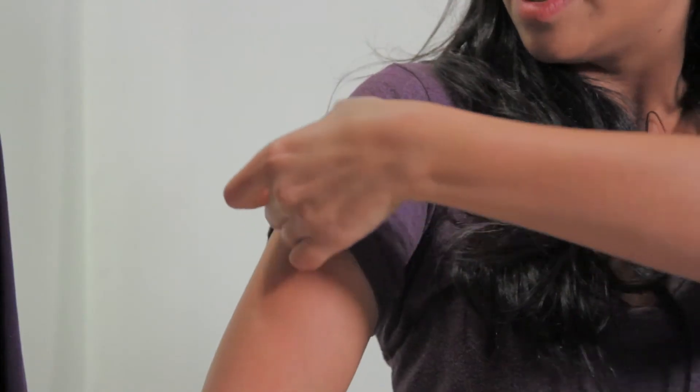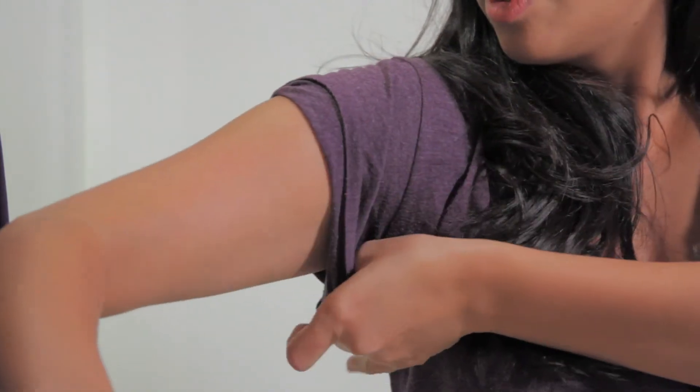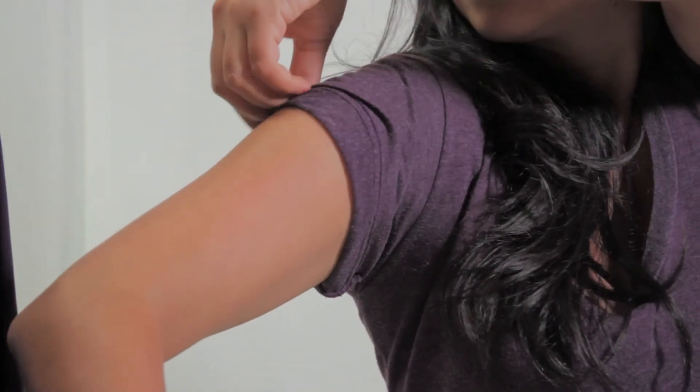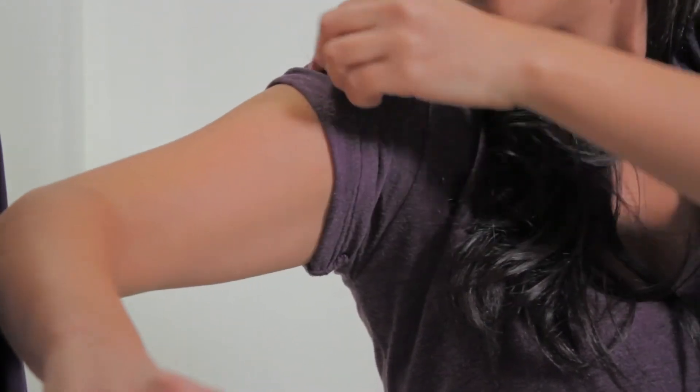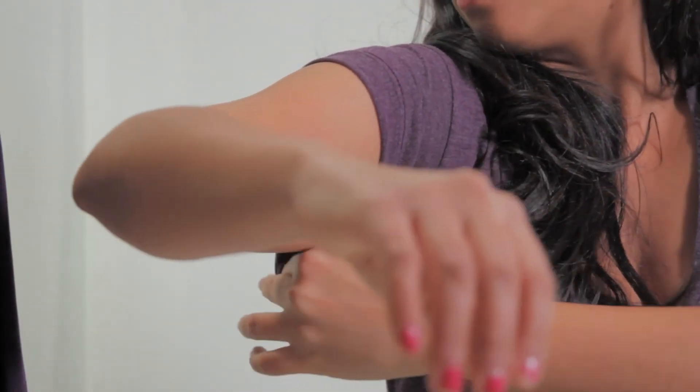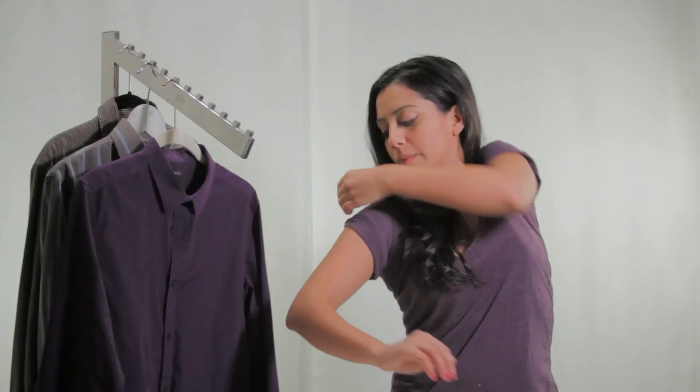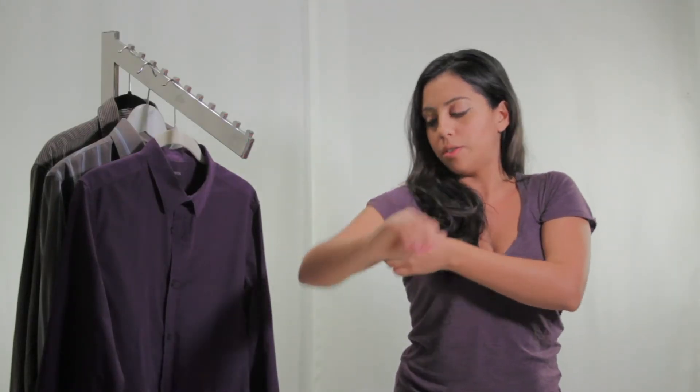Once you have that on, you're going to go ahead and do your first roll. Sometimes it helps to have a buddy do this because it can be a little bit tricky to get it even all the way around. If you're by yourself, I bet you can figure it out and do it like I am here. Once it's even and straightened out all the way under, you're ready for your next roll.